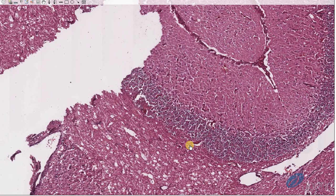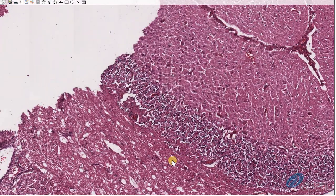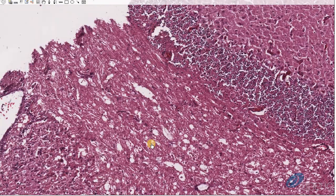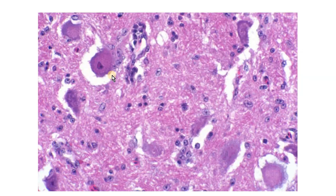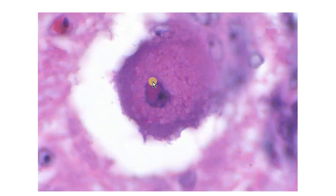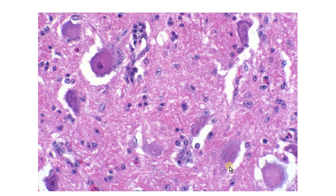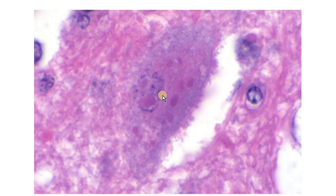The slide quality here is not the best to view and find the intranuclear and intracytoplasmic inclusions, so snapshot images acquired from the Joint Pathology Center website of the same case will be used. As mentioned, paramyxoviruses are among the few viruses capable of causing both intranuclear and intracytoplasmic inclusion bodies at the same time. We can see in this example intranuclear inclusions, and here is a cell containing both intranuclear and intracytoplasmic inclusions — multiple eosinophilic inclusion bodies visible at higher magnification.